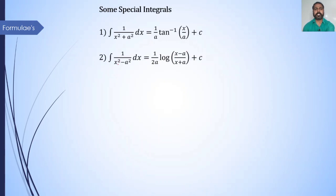Second formula: integration of 1 upon x² minus a² dx is equal to 1 upon 2a times log of (x minus a) divided by (x plus a), plus c. Remember, x² minus a² can be factorized as (x minus a)(x plus a) — two linear factors. So starting with 1 upon 2a, the negative factor (x minus a) is in the numerator and the positive factor (x plus a) is in the denominator.